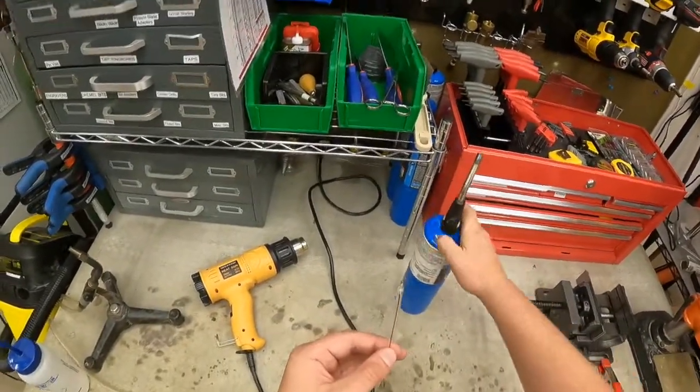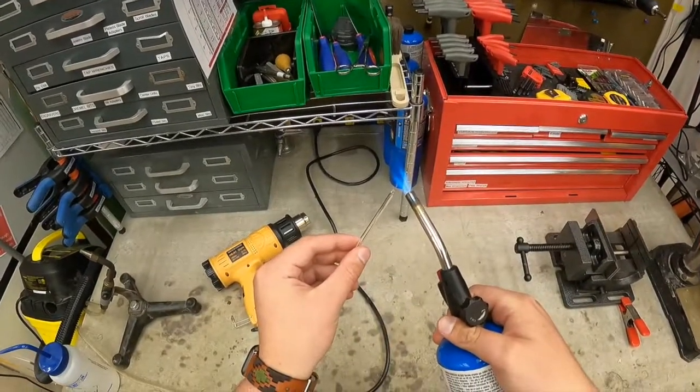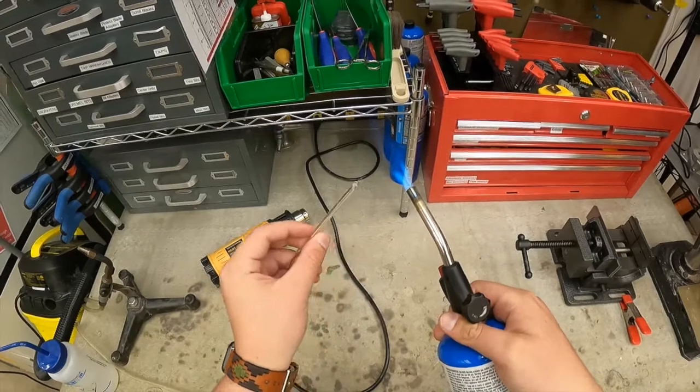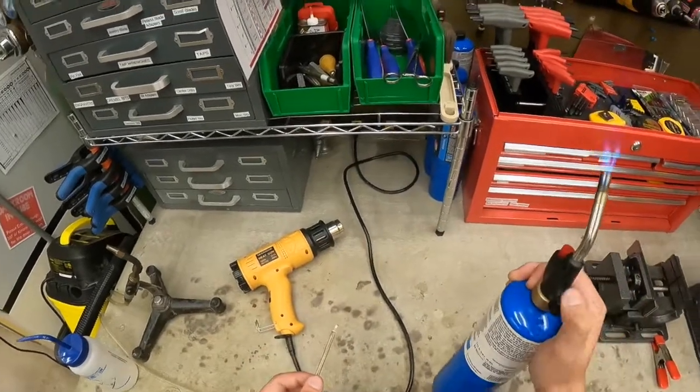Now, when you first put the torch into the flame, you might notice that it doesn't start glowing right away. That's just because of some excess water. That means it hasn't air dried enough, so you're just going to pull it out for a second, let that evaporate, and then you can see it starts glowing right away there.